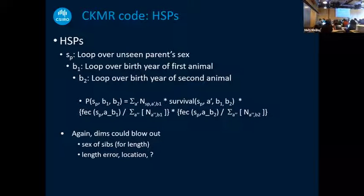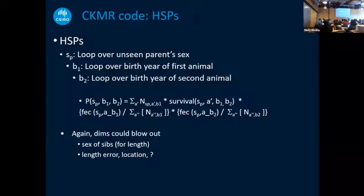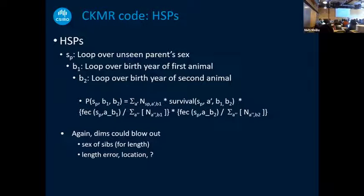For the half-sibling probability, you're looping over the birth years of both individuals — which you'll express as the year you sampled it and the age or length when sampled. You loop over the unseen parent sex. Mitochondrial DNA tells you whether your siblings share a mother or a father, although there might be some uncertainty in that. As you saw from the cartoon, survival matters — the mother has to survive from the birth of the first individual to the birth of the second individual, and her fecundity might change. This equation involves her fecundity in the first birth year and her fecundity in the second birth year, and again there could be a lot of other dimensions involved.